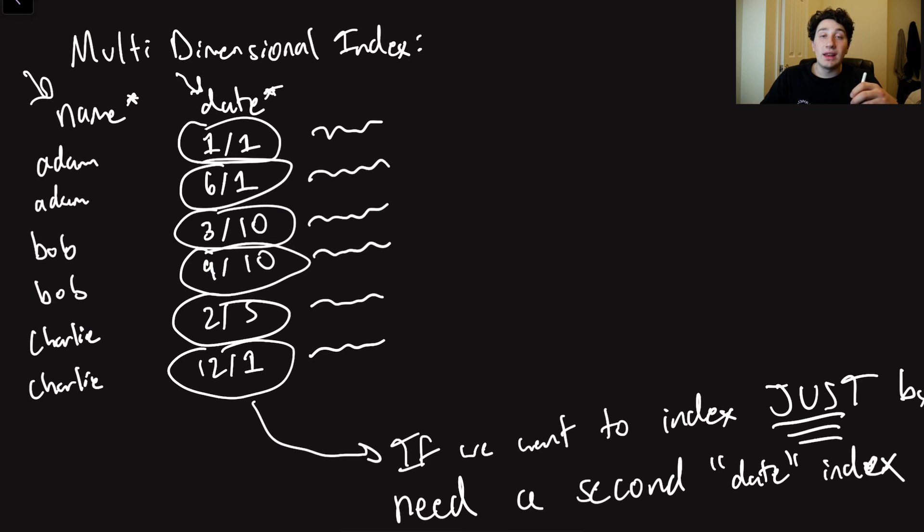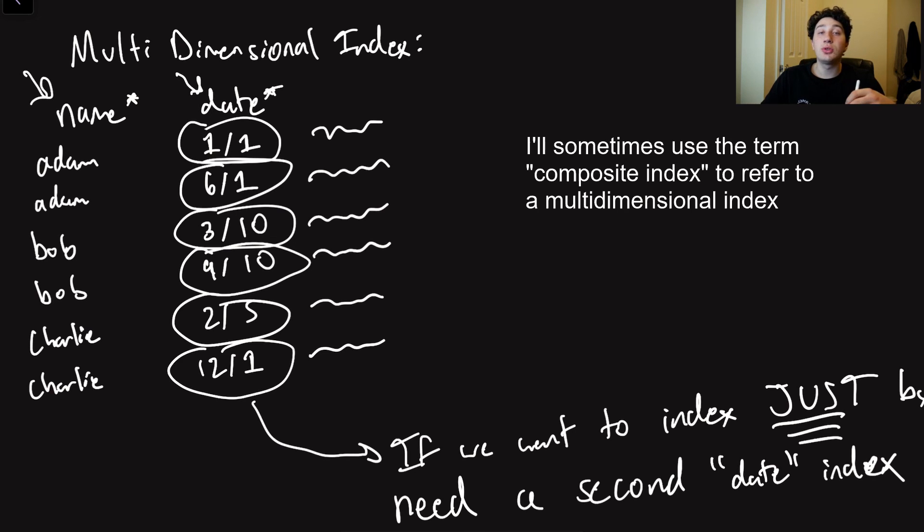That is as if you just had one index, right? Two separate indexes will sort each field individually. So I just wanted to go ahead and clear that up.